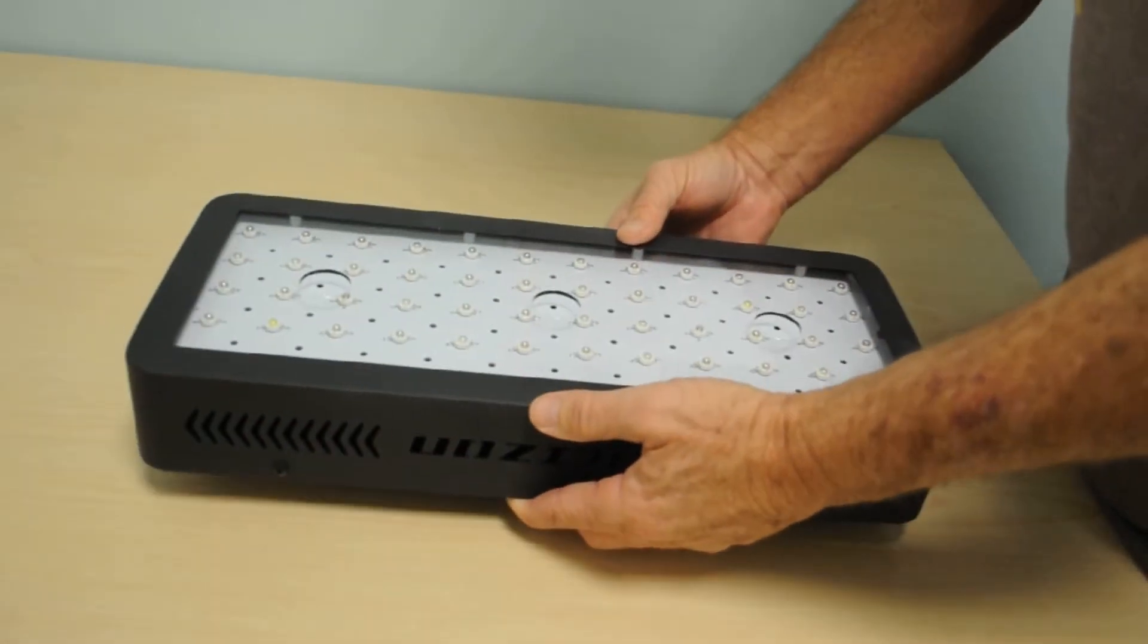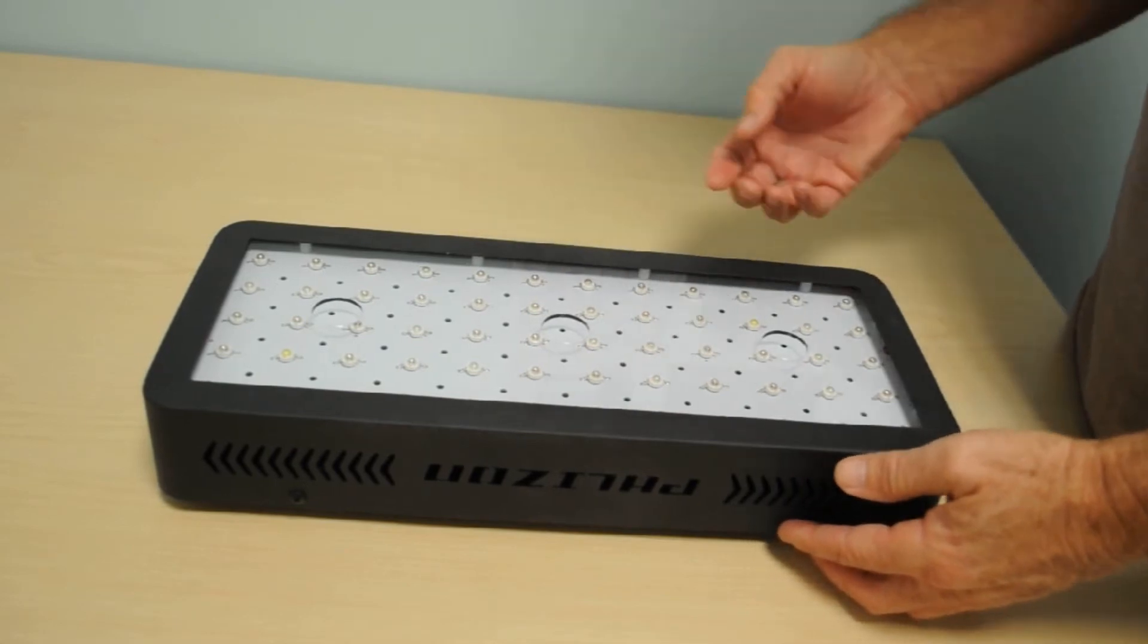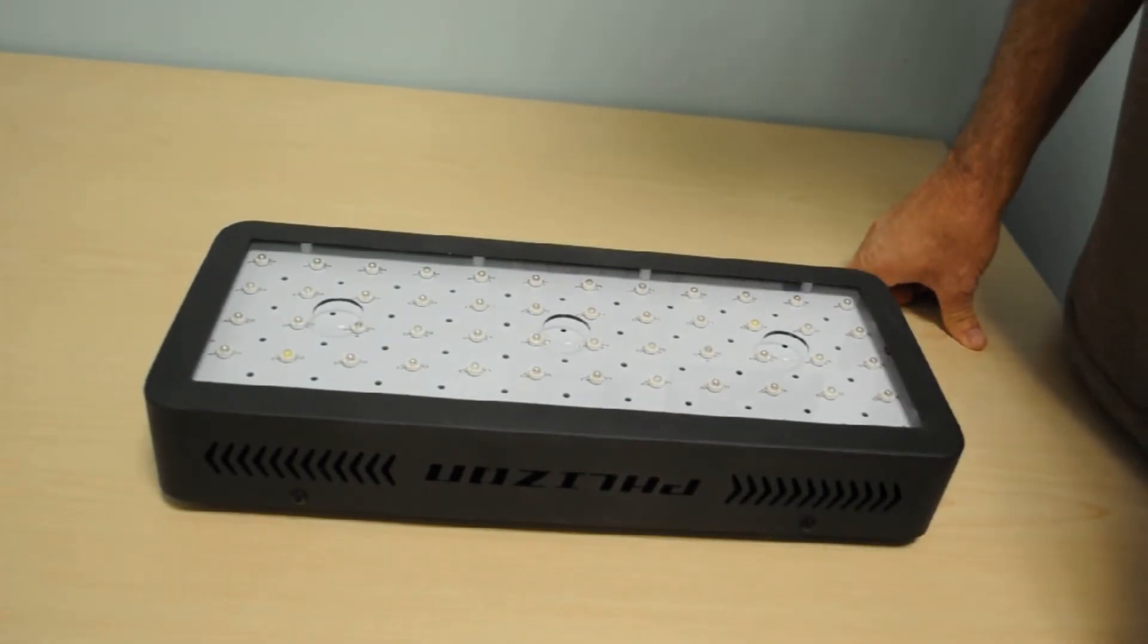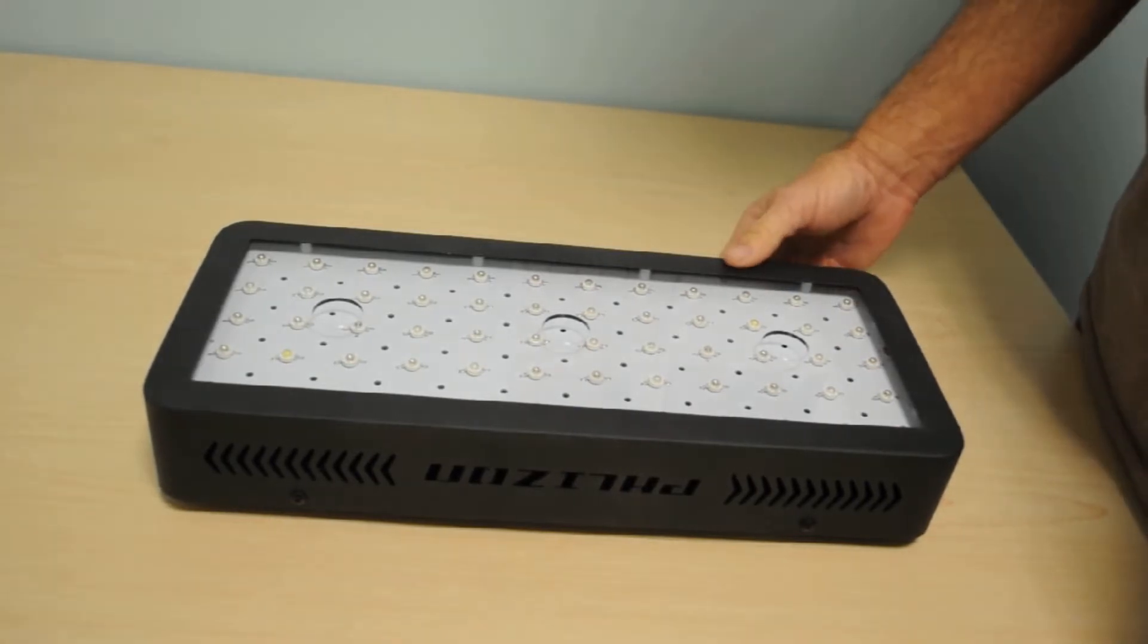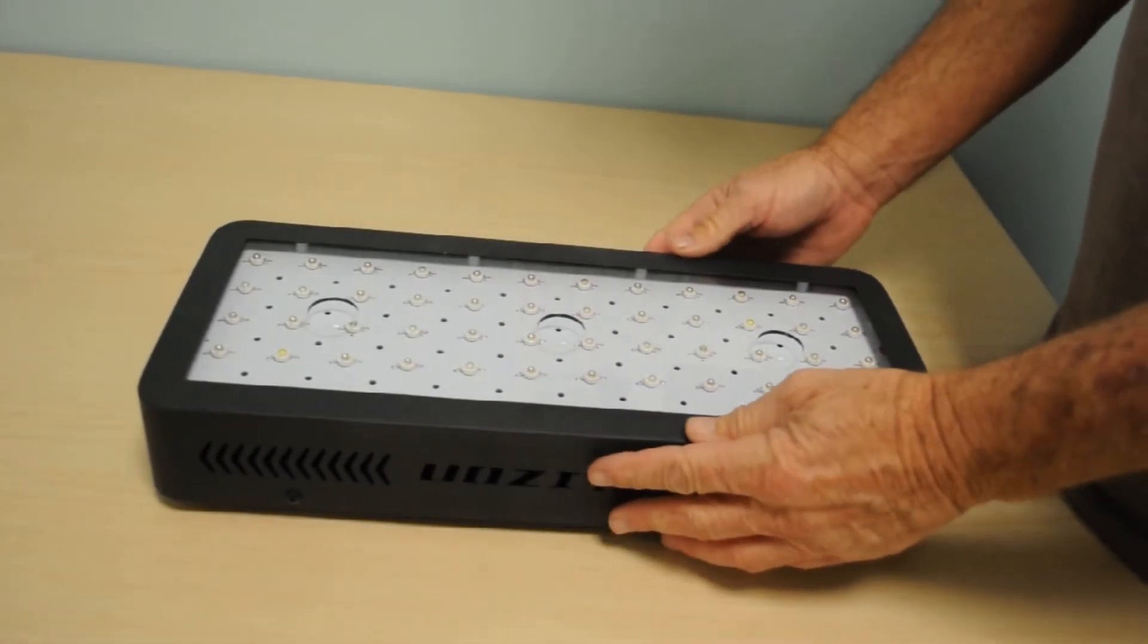According to the eBay specification sheet, it uses 10 watt double chips and there's 60 of them. It has 38 red, 17 blue, two white light LEDs, two infrared and then one ultraviolet. So a lot of people really like the ultraviolet and the infrared addition, and so that's a nice feature of the light.